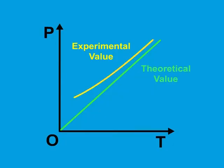However, the experimental graph between P and T shows some deviation from the straight line graph, and this deviation is much more pronounced at low temperatures.